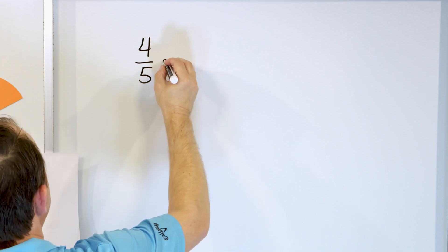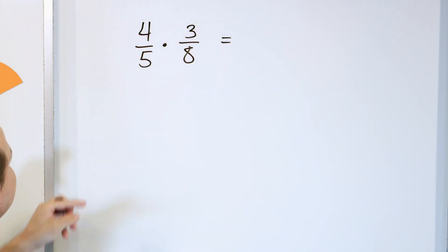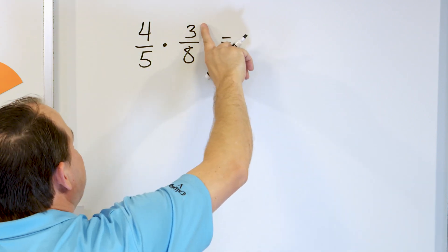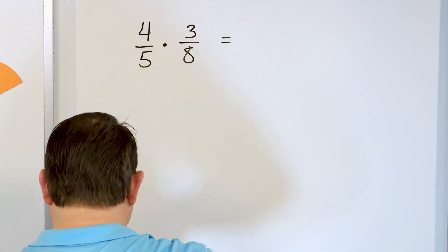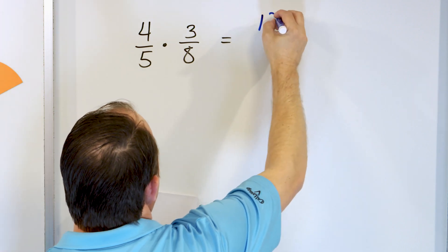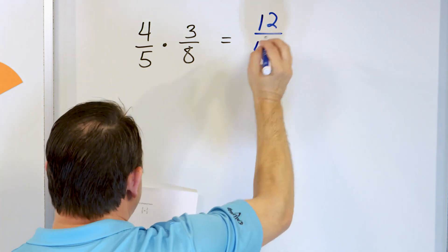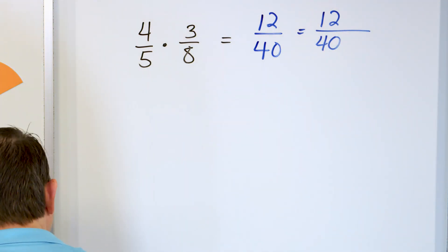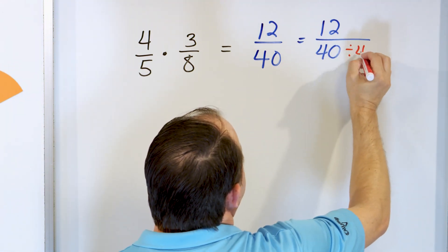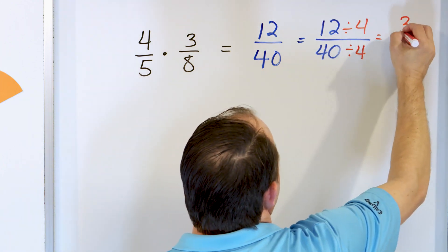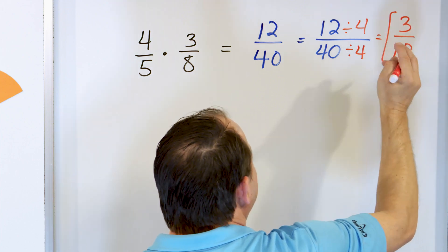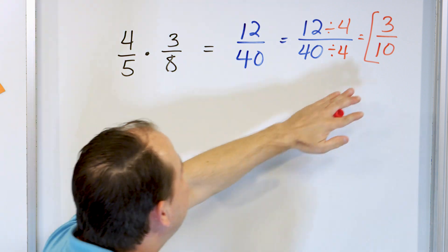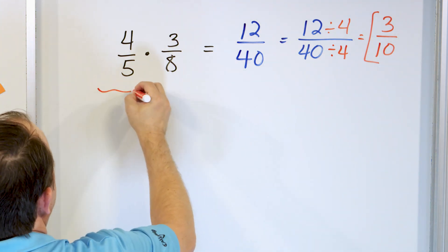Let's take four fifths multiplied by three eighths. It means start with four fifths of a pizza and chop it by three eighths — cut it into eight equal pieces and keep three of them. Multiply the numerators: four times three is twelve. Multiply the denominators: five times eight is forty. We have twelve fortieths, but we can simplify. Both are divisible by four: twelve divided by four is three, forty divided by four is ten. The answer is three tenths.